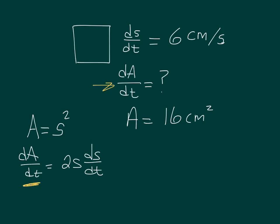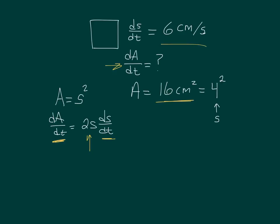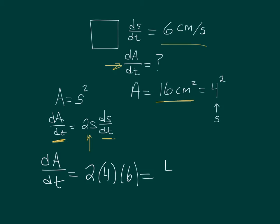This is what we're looking for and I'm given ds/dt, but how do I find s? They told me the area was 16, and since area equals s squared, 16 = s², so s = 4. Now I have everything I need: two times 4, times 6 centimeters per second, which gives me 48. The 4 is in centimeters and the 6 is in centimeters per second, so the answer is 48 square centimeters per second.